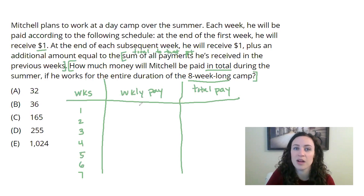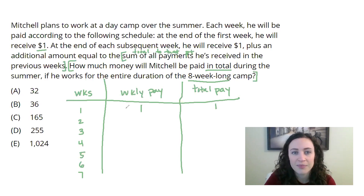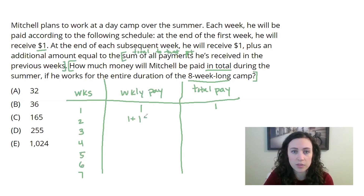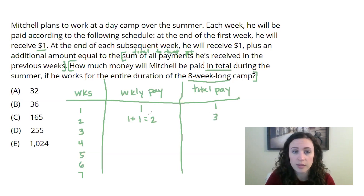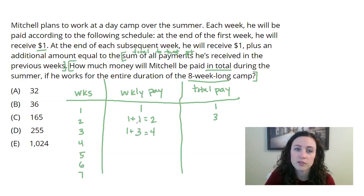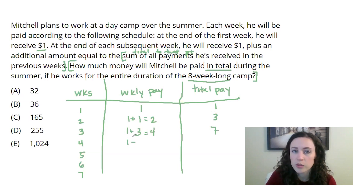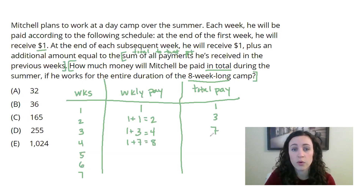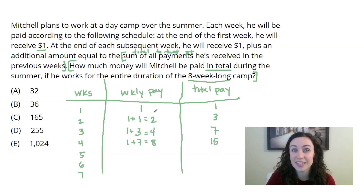At the end of the first week, Mitchell received his $1 — not a great paycheck. In week two, he receives $1 plus the sum total of all else he's been paid, which is still just $1 at this point, so end of week two he gets $2. His total pay so far is $3. In week three, he gets $1 again plus the previous total of $3, so he gets $4 — I'm seeing a pattern emerging. His total pay is $7. Week four, I'll do it one more time to confirm: $1 plus the previous total of $7 gives him $8. It's starting to look a little better for him — still not great. And his total is $15. I'm definitely seeing the pattern now.